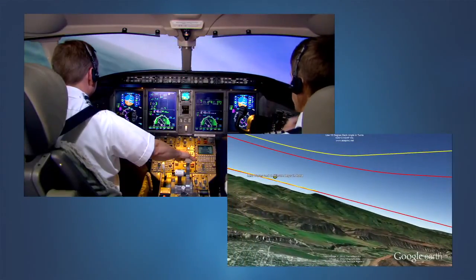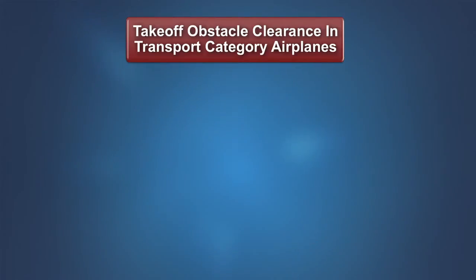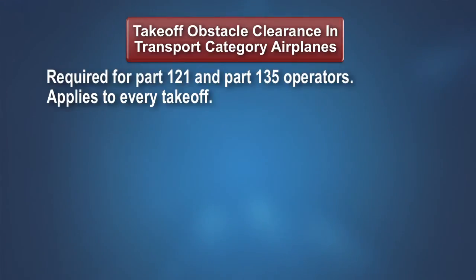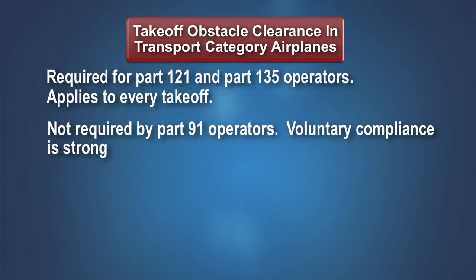As we bring the discussion to a close, it is beneficial to review a few key points. Part 121 and Part 135 operators of transport category airplanes have a legal requirement to ensure that the net takeoff flight path clears obstacles following an engine failure at or above V1 speed. These operators must consider takeoff obstacle clearance for every takeoff, regardless of whether the airplane is operated under IFR or VFR, or whether weather conditions are VMC or IMC. Though not required, voluntary compliance is strongly encouraged for Part 91 operators.